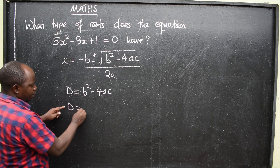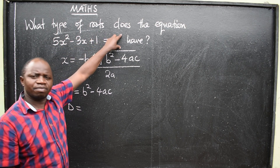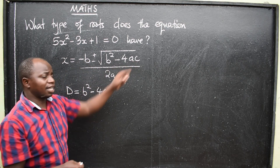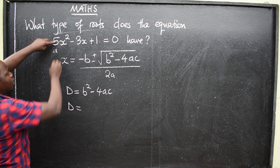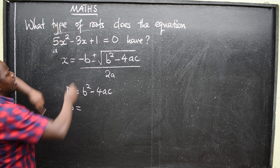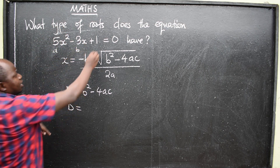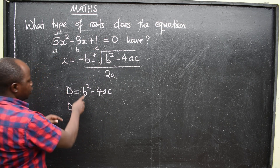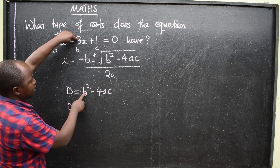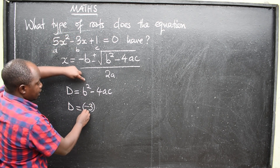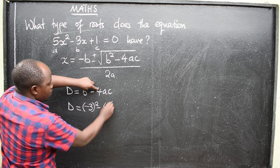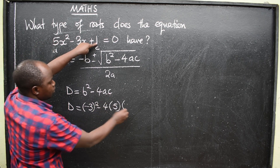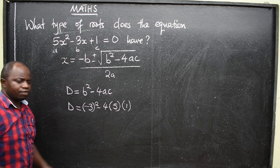Now, the discriminant is equal to b squared minus 4ac. From this quadratic equation, we have a, b, and c. The a is the coefficient of x squared, b is the coefficient of x, and c is the constant. So, b is negative 3, a is 5, and c is 1.